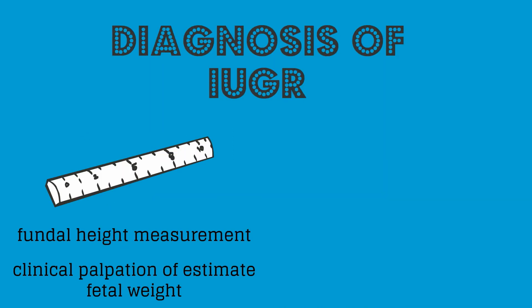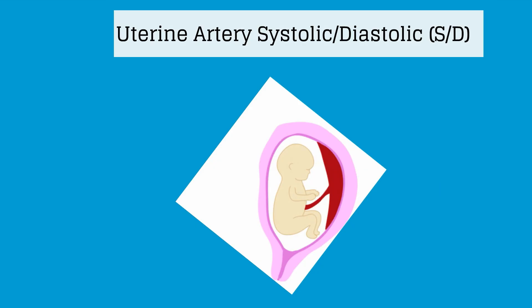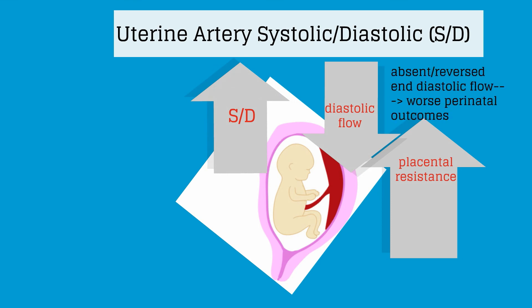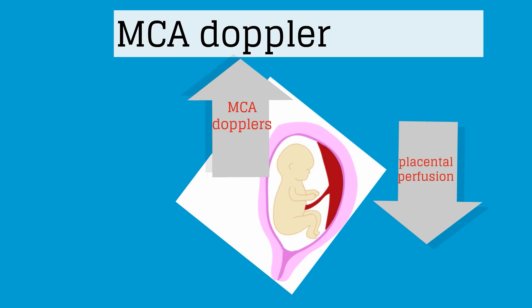The diagnosis of IUGR is similar to macrosomia in that fundal height and clinical palpation of an estimated fetal weight can help a clinician suspect IUGR. Ultrasound can be utilized to estimate fetal weight. Doppler velocity of fetal vessels is very important in the management of IUGR. The uterine artery systolic-to-diastolic ratio evaluates the fetal-placental circulation. As placental resistance increases, diastolic flow decreases, causing an increase in the systolic-to-diastolic ratio. Absent or reversed end-diastolic flow predicts a worse perinatal outcome and is usually an indication for delivery. The middle cerebral artery, or MCA, Dopplers reflect fetal adaptation, as the fetus always tries to spare fetal brain circulation. When there is decreased placental perfusion, there is increased MCA Doppler flow.